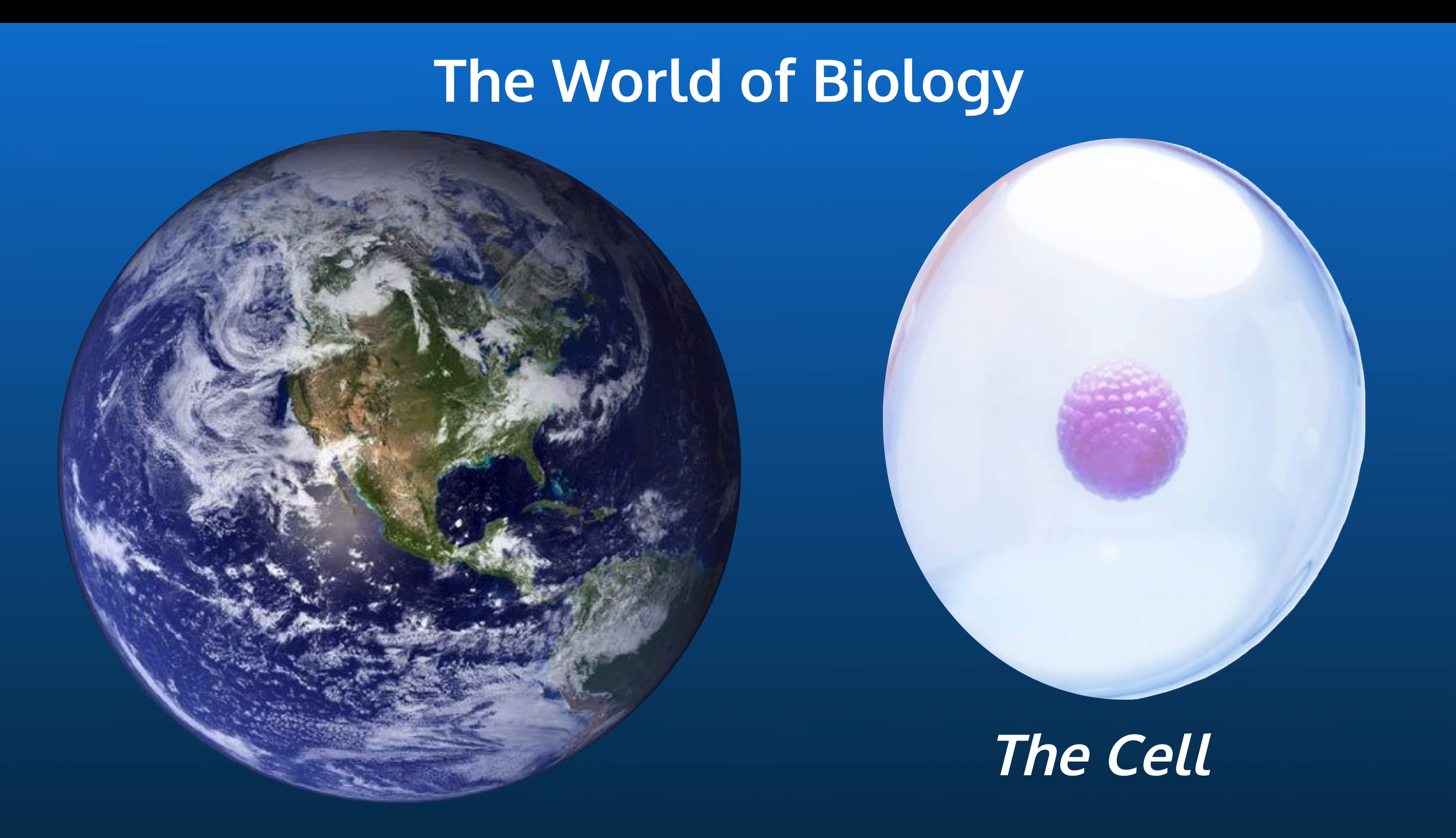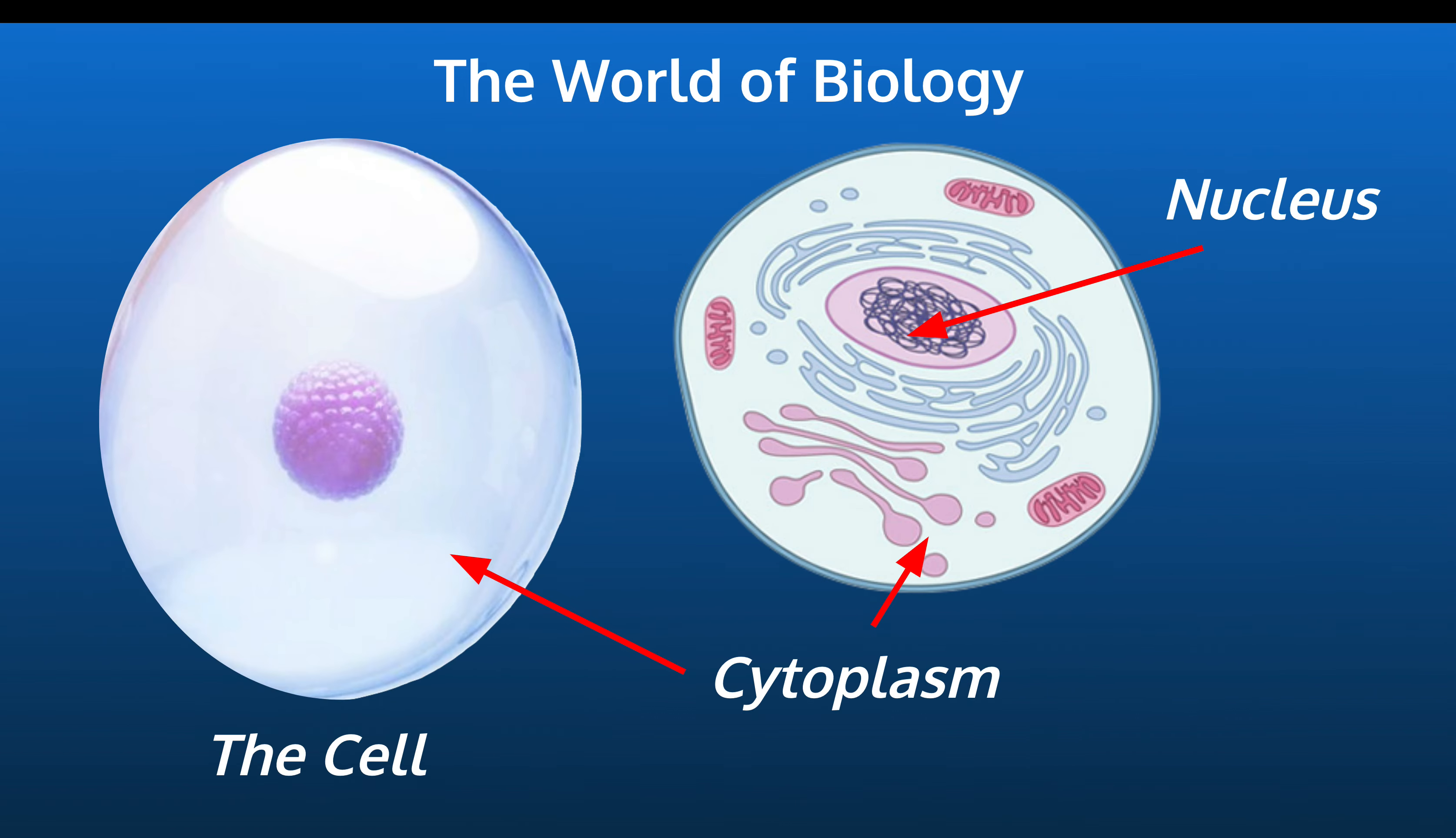Again, the cell is our unit. And here's a little bit more of a complex schematic. As you can see, there's all kinds of other structures. Those are called organelles. For now, just focus on there being a nucleus and a cytoplasm. And the cytoplasm contains everything else. The nucleus contains DNA.